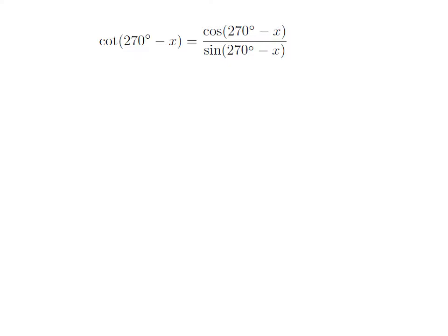So cot of 270 degrees minus x is equal to cosine of 270 degrees minus x divided by sine of 270 degrees minus x.